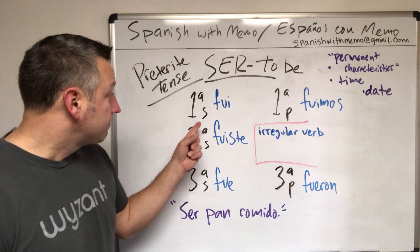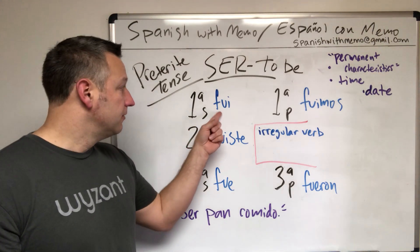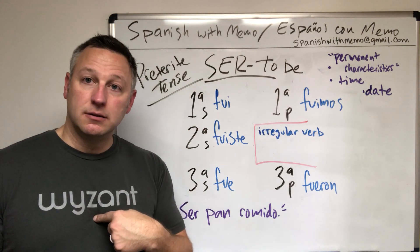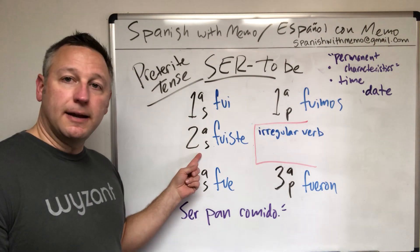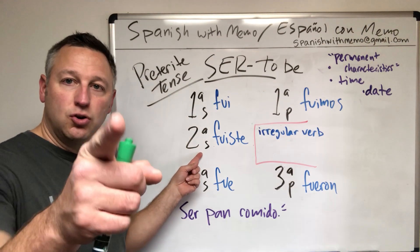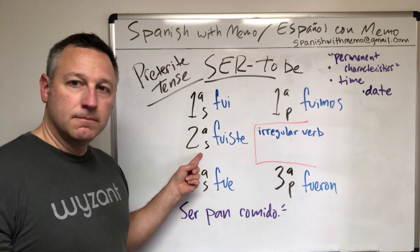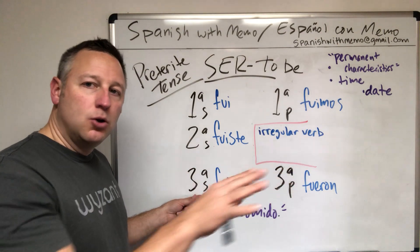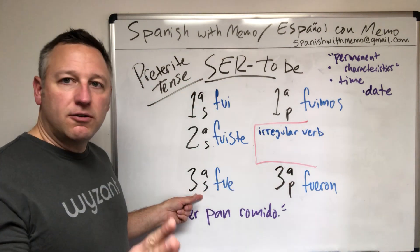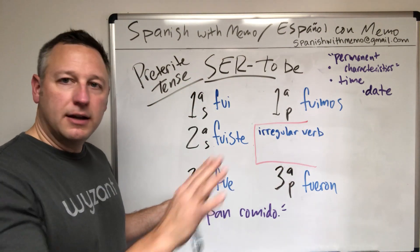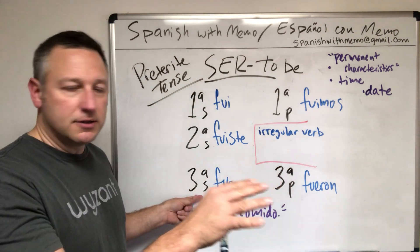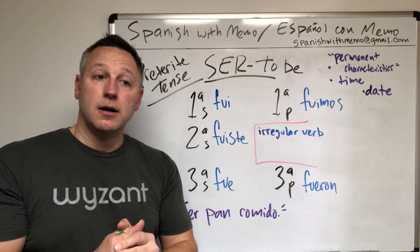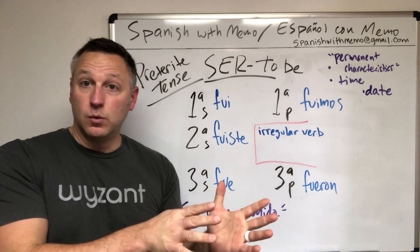First person singular: fui — I was. Tu fuiste — you were. Third person singular: él fue, usted fue — he was, she was. Usted fue — you were. The dog was.